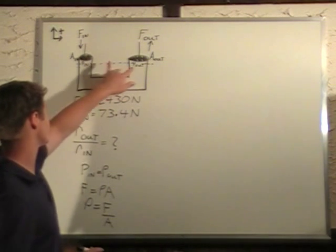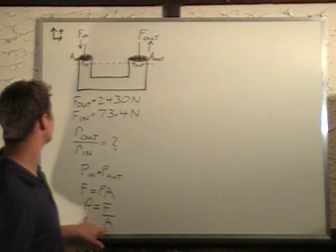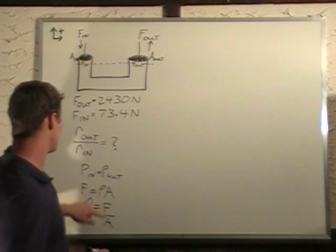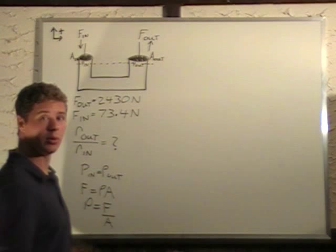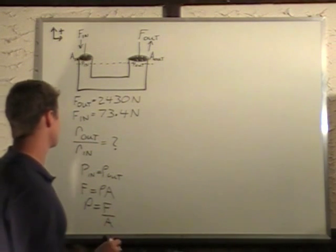So now we have an equation that we can use to relate these two pistons. Because we know that these pressures are the same, P_in equals P_out. We have a formula for pressure relating to force that we know and the area that we don't know, but we're looking for a ratio of these radiuses, so we can get that from there.